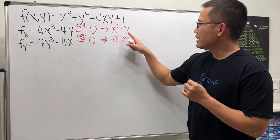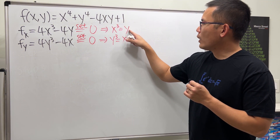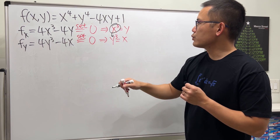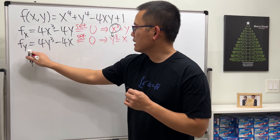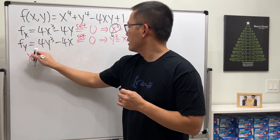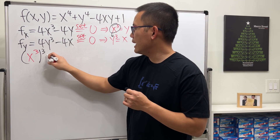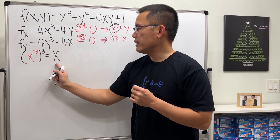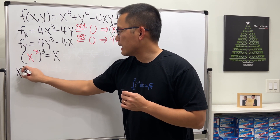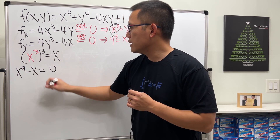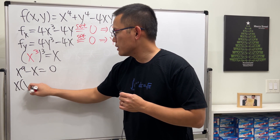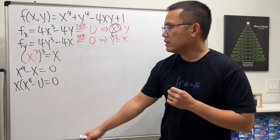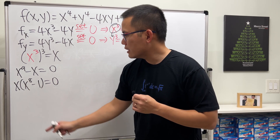Now substitute y = x³ into y³ = x. We get (x³)³ = x, which means x⁹ = x. Bringing x to the other side: x⁹ − x = 0. Factor out x to get x(x⁸ − 1) = 0.